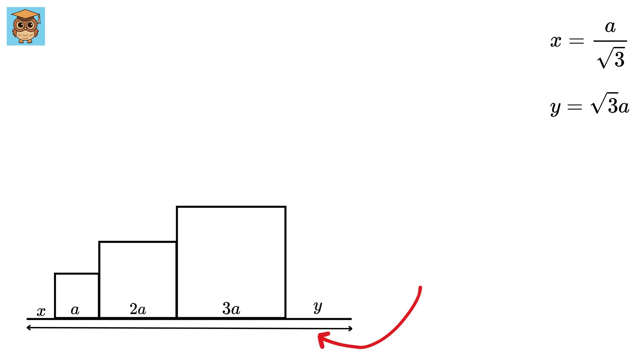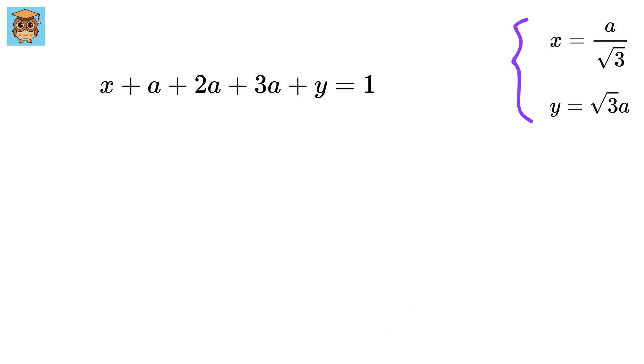Now consider this side of the triangle. It is equal to x plus a plus 2a plus 3a plus y. But it is also equal to 1, so substitute the values of x and y to get this.